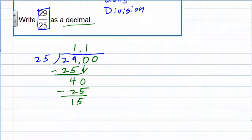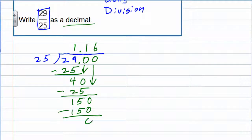So I want to keep adding zeros. I'm going to add another one to bring down. Now 25 goes into 150 — this time it goes in 6 times. 6 times 25 is 150. We have no remainder, so that's how we know we can stop. We have converted the fraction 29/25 into a decimal: 1.16.